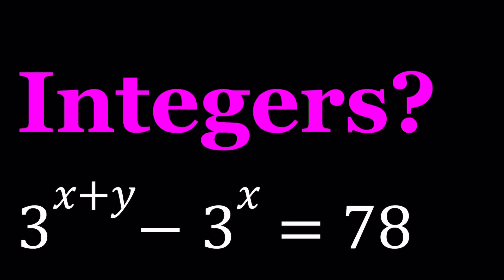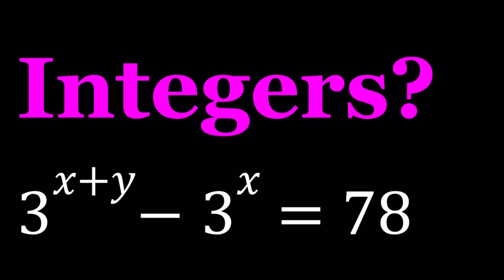Hello everyone. In this video, we're going to be solving a nice homemade Diophantine equation. In other words, we're going to be solving for integers. We have 3 to the power x plus y minus 3 to the power x equals 78.